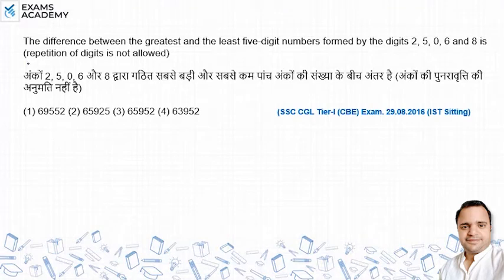Hello friends, now we will solve this question. The difference between the greatest and the least five-digit number formed by the digits 2, 5, 0, 6, and 8 — repetition of digits is not allowed.